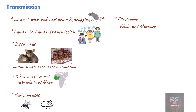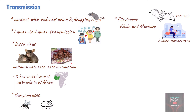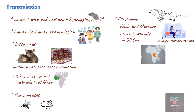Filoviruses have been detected in bats in Africa. Once humans are affected, there is a risk of person-to-person spread, especially in those caring for infected patients. There have been several Ebola outbreaks in the Democratic Republic of Congo with case fatality rates as high as 90%. Fatality rates for Marburg hemorrhagic fever are also very high in low-income countries.